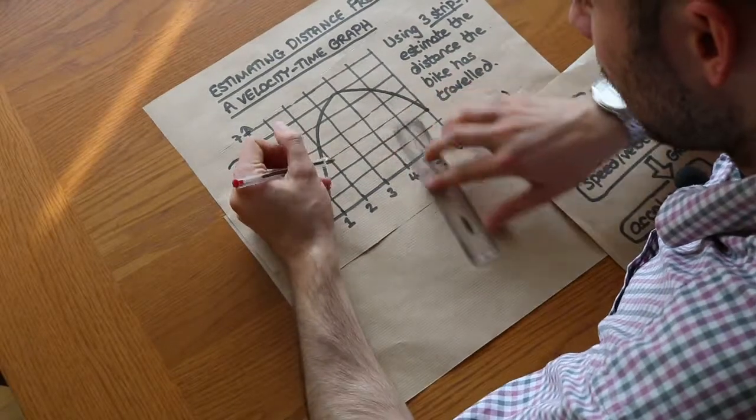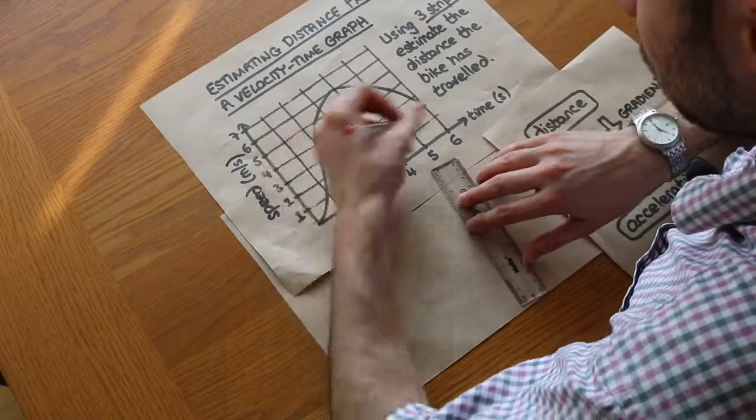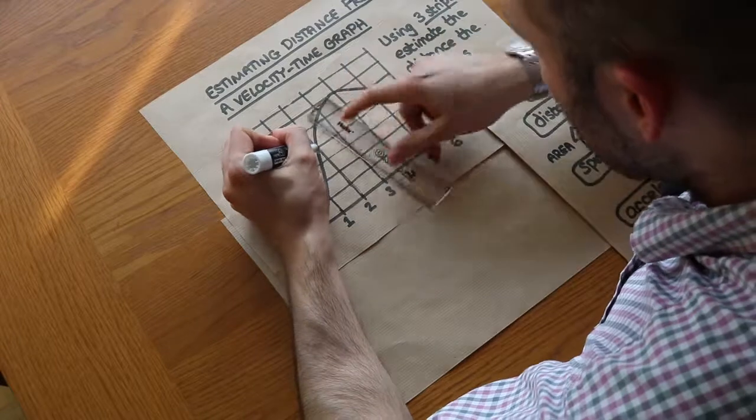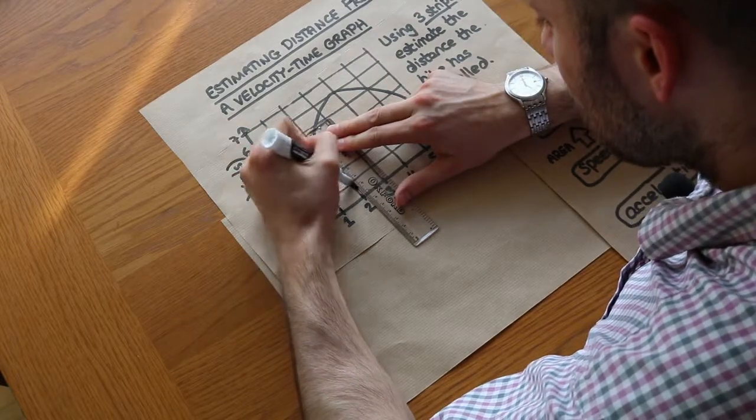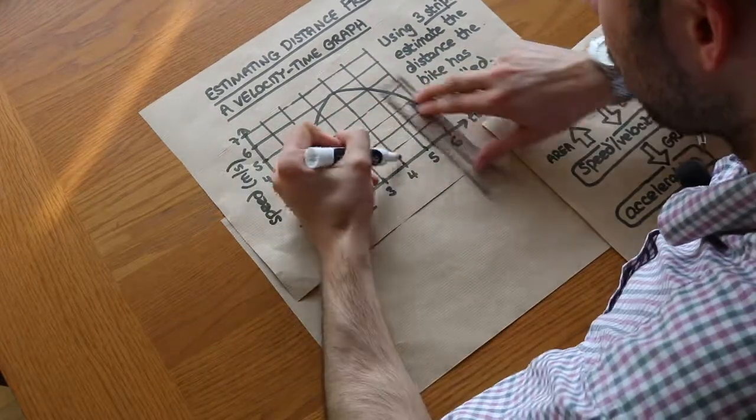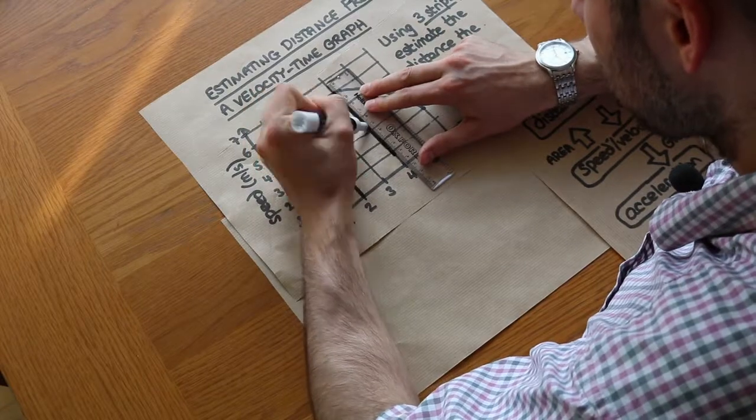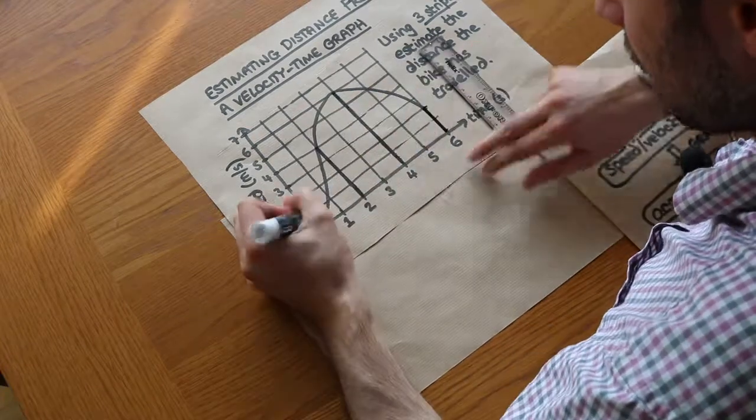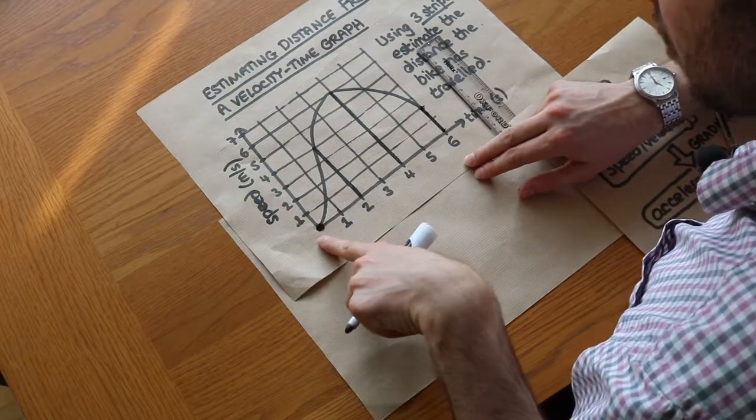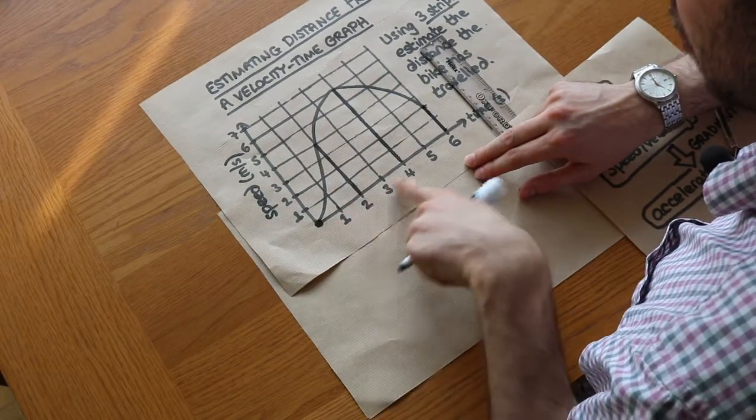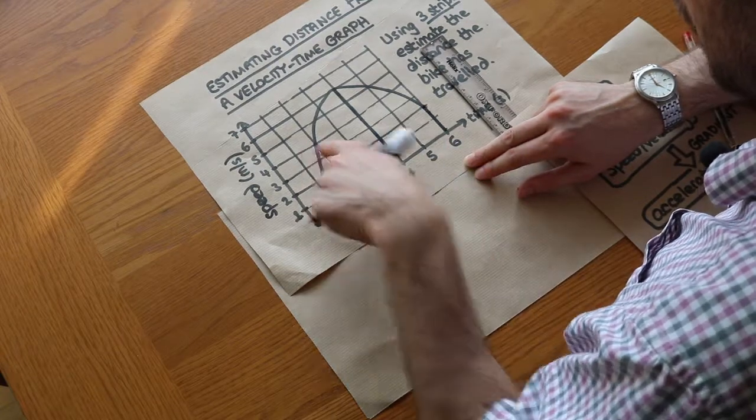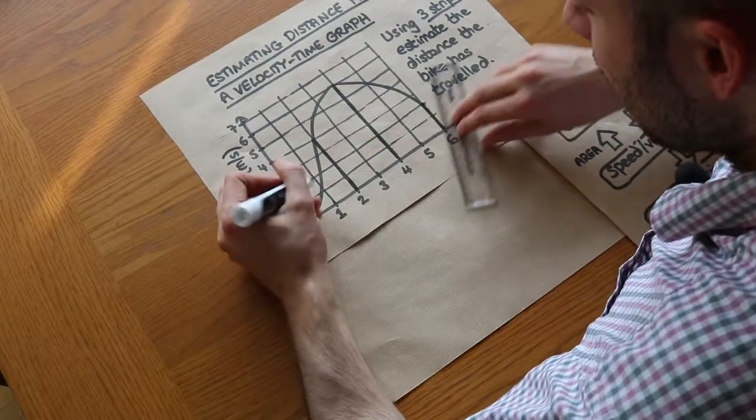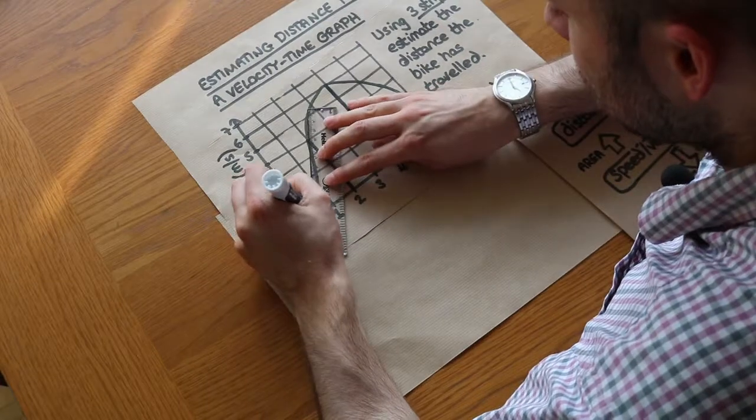And then what we do is from each time, so the two seconds, four seconds, etc., we draw a line up to the graph like this. And the same with the four second mark, so we draw a line up, and then a line up from here as well, and then this point here as well. So each of those x values, 0, 2, 4, 6...